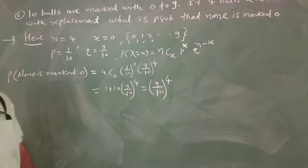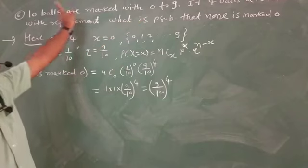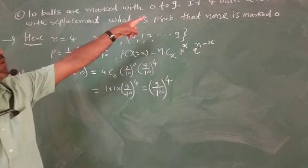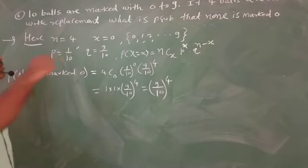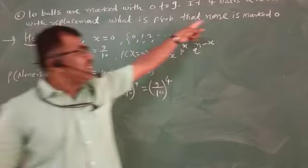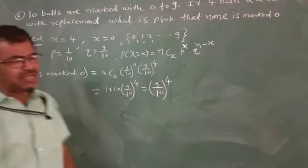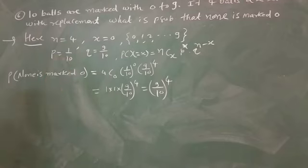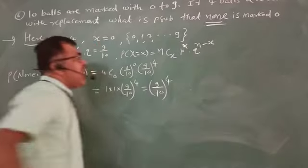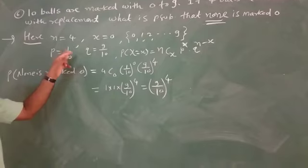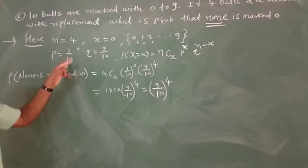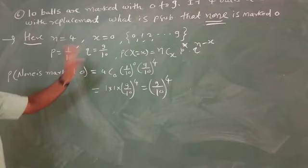What is n? Ten balls are marked with zero to nine. Four balls are selected, therefore n equal to four. What is the probability that none is marked with zero? That is x equal to zero. Zero to nine — ten values. Probability of one is one upon ten. Q equal to nine upon ten.